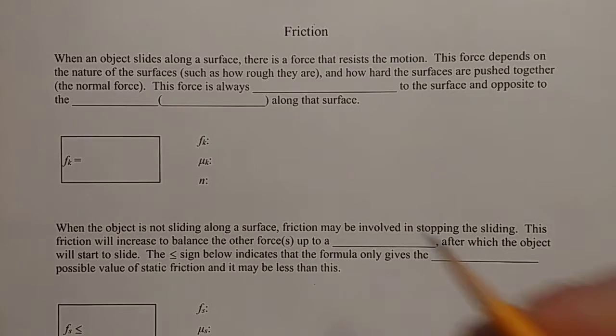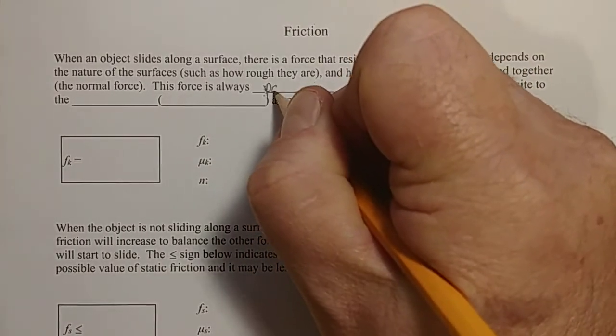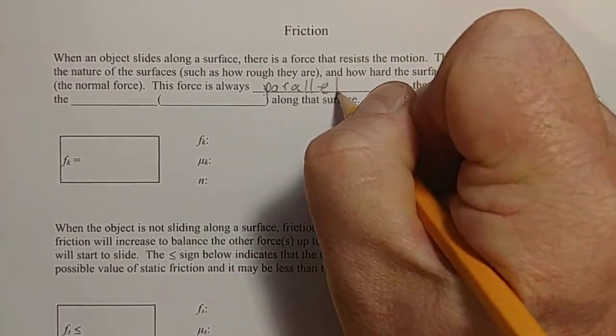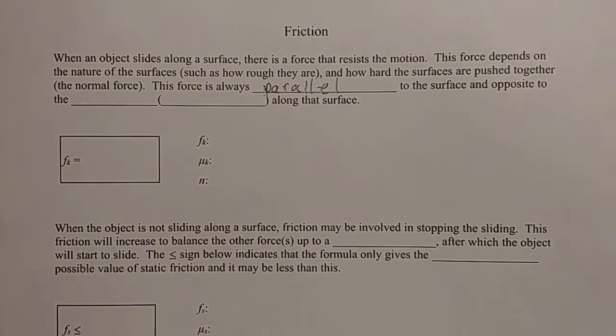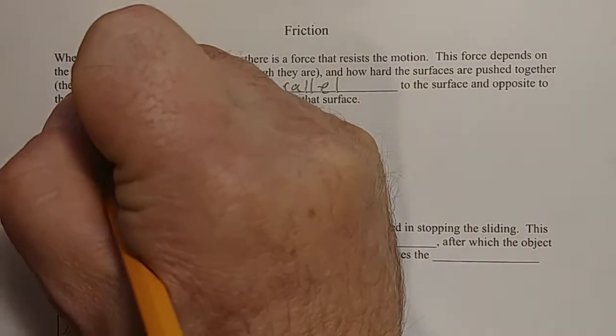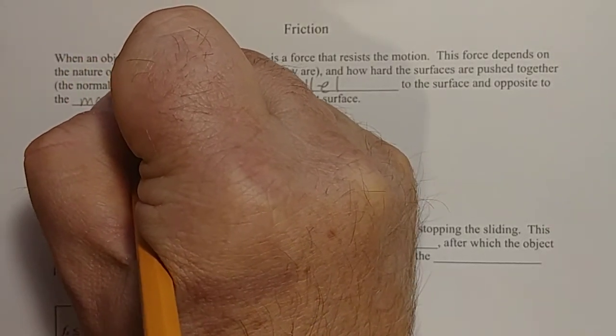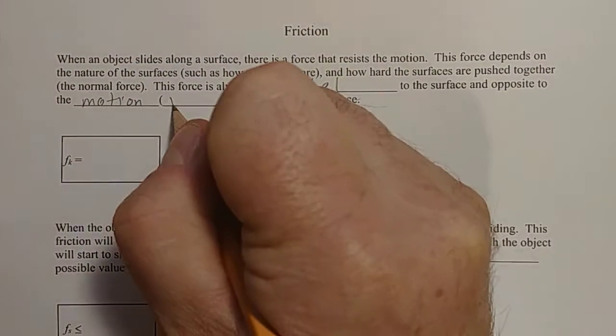This force is always parallel to the surface. So if something is moving along a surface, it pushes back on it, parallel to the surface, and it is opposite to the motion. And by motion, we are always referring to velocity.